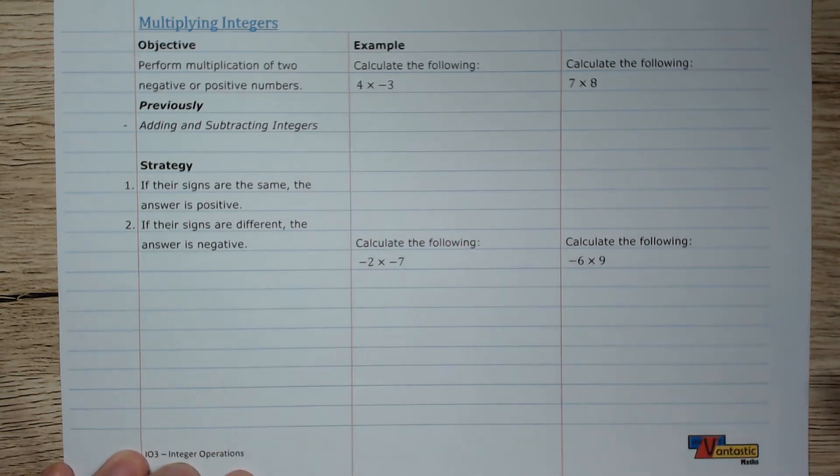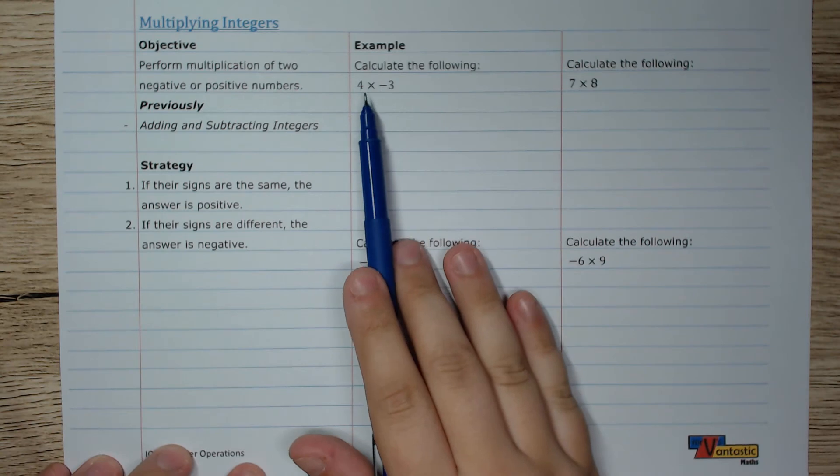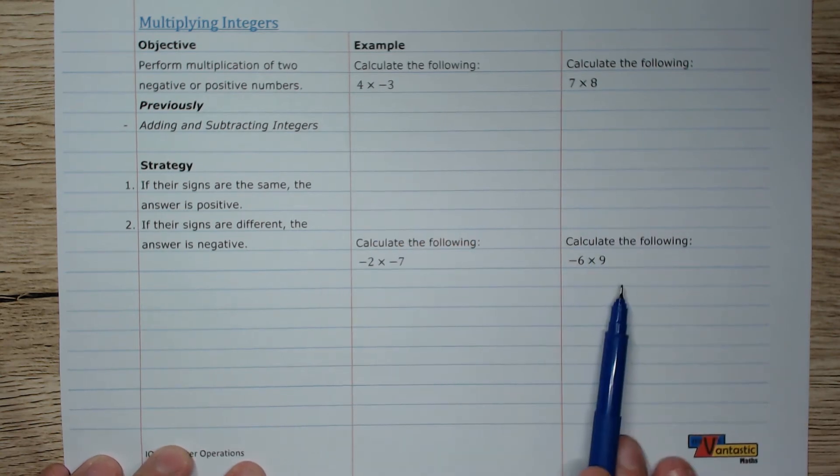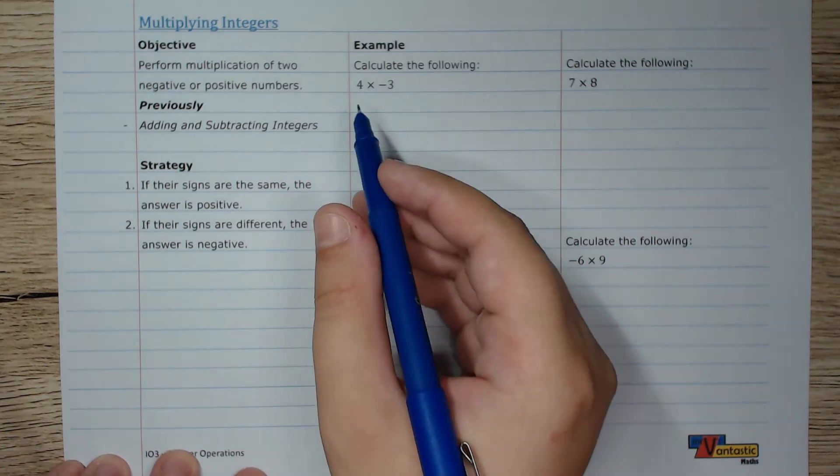And so we need to be able to deal when we have mixed signs in our questions. So when we're looking at a multiplication problem like the ones shown here, we are going to look at what sign each of the numbers are.